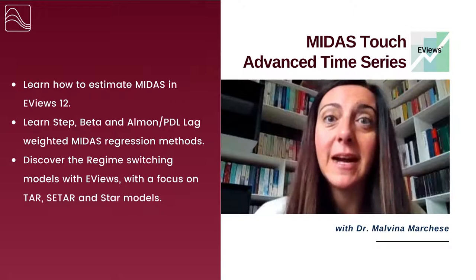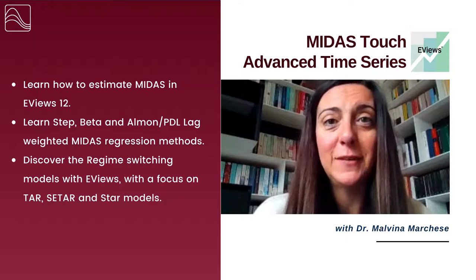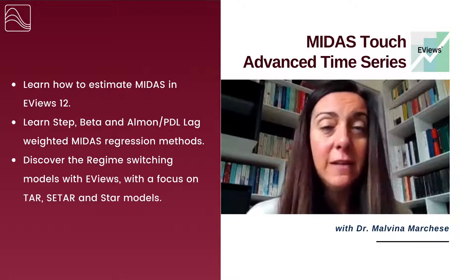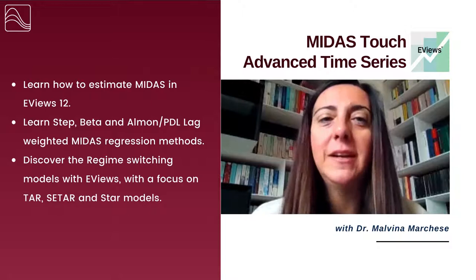We are going to discuss how we can estimate MIDAS in EVIUS, why the forecasting performance of the MIDAS is so much better than a model where we aggregate frequency, giving up on some information coming from high frequency. We will also discuss the choice of the weight function, including the latest release of EVIUS 12, where the weight function can be selected via machine learning methods.